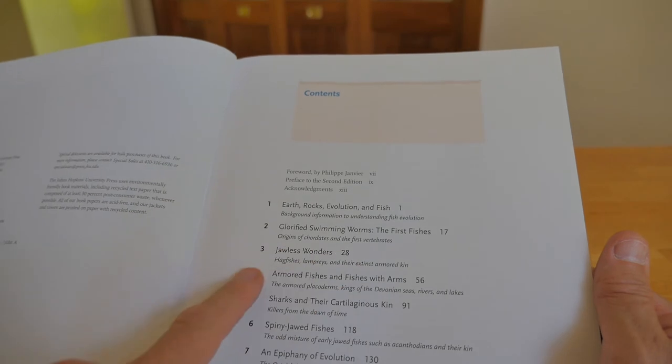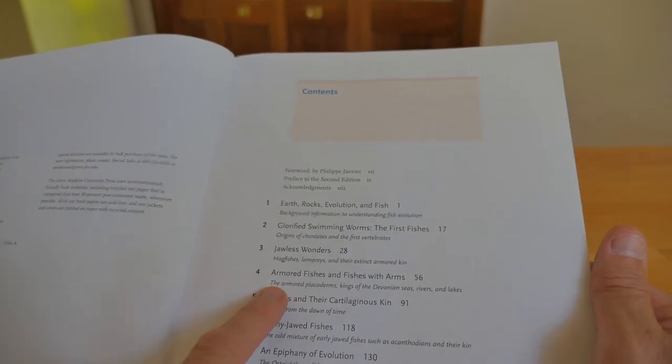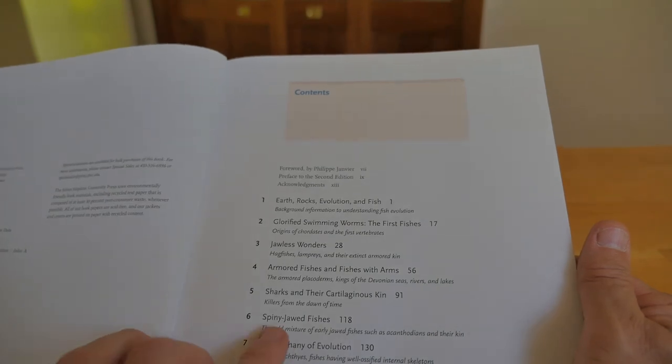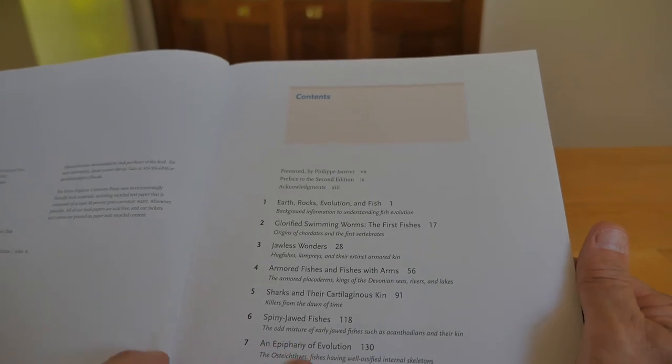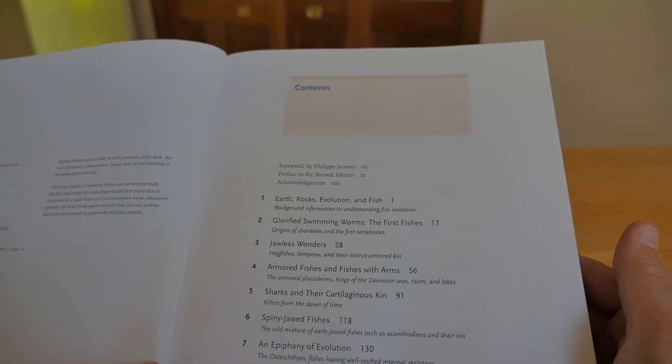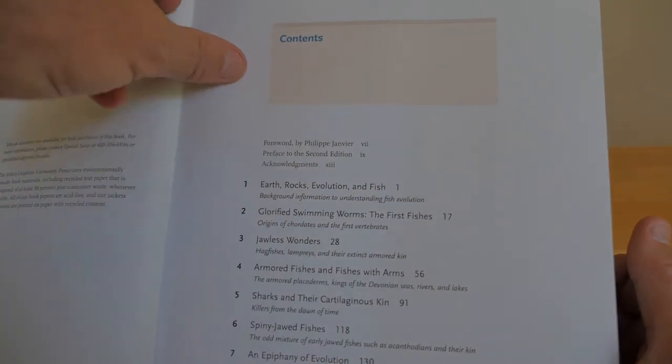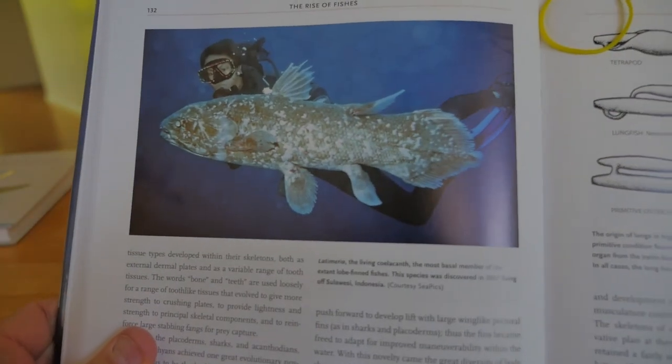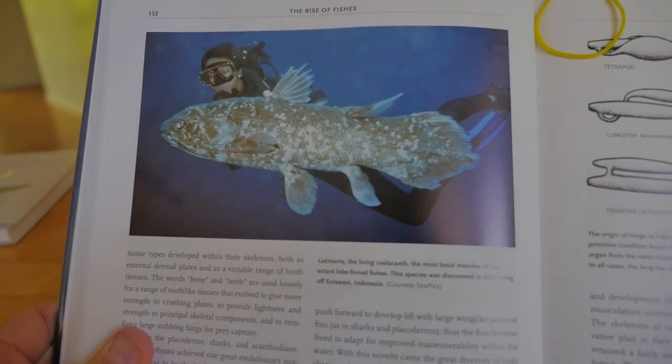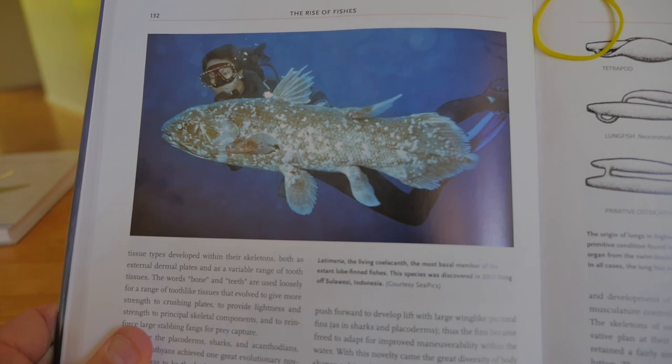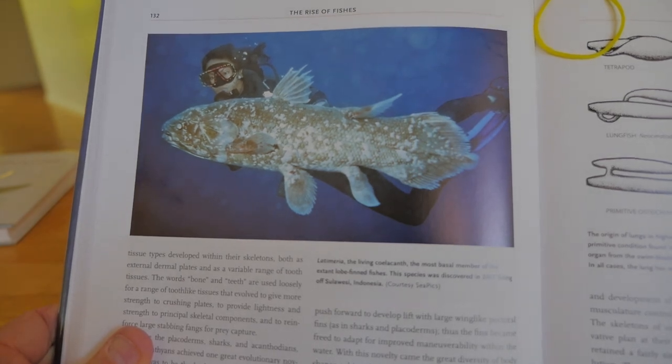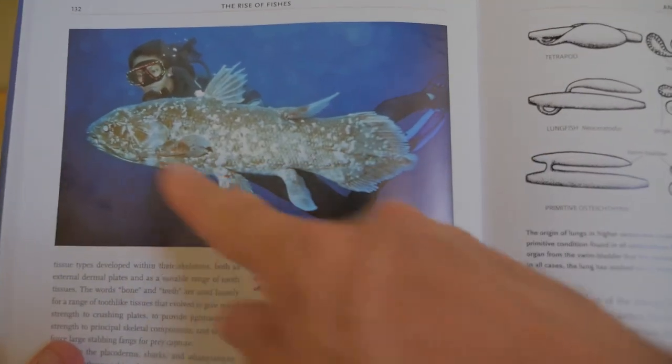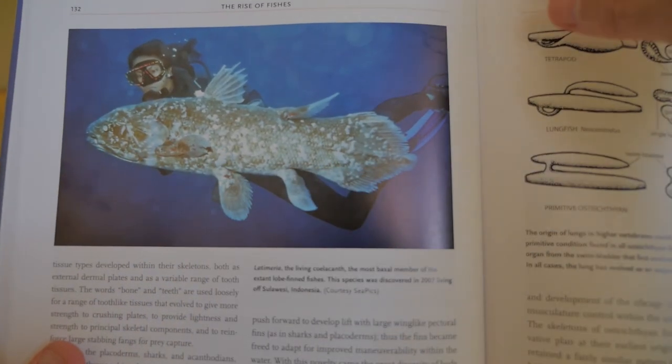Swimming worms, jawless wonders, armored fish, sharks and their cartilaginous kin, spiny-jawed fishes, the epiphany of evolution. That's primitive ray-fin fishes. Okay, let's have a look. What else I got in here? Oh, look at that. There's a coelacanth. Latimeria, the living coelacanth, the most basal member of the extant lobed fin fishes. All right. That's pretty good. I didn't know they were that big. Look at that. They're about the size of a human being almost.